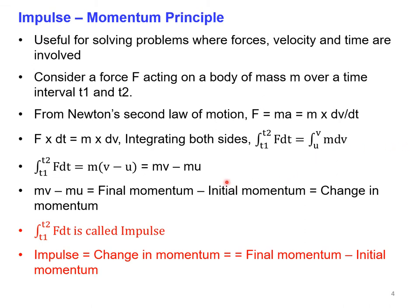Now let us derive the impulse-momentum equation. This principle can be used for solving problems where force, velocity, and time are involved. Consider a body of mass m with force F acting on it over a time interval t1 to t2. We derive the equation from Newton's second law of motion: F = ma. Since acceleration is rate of change of velocity, this becomes F = m·dv/dt.